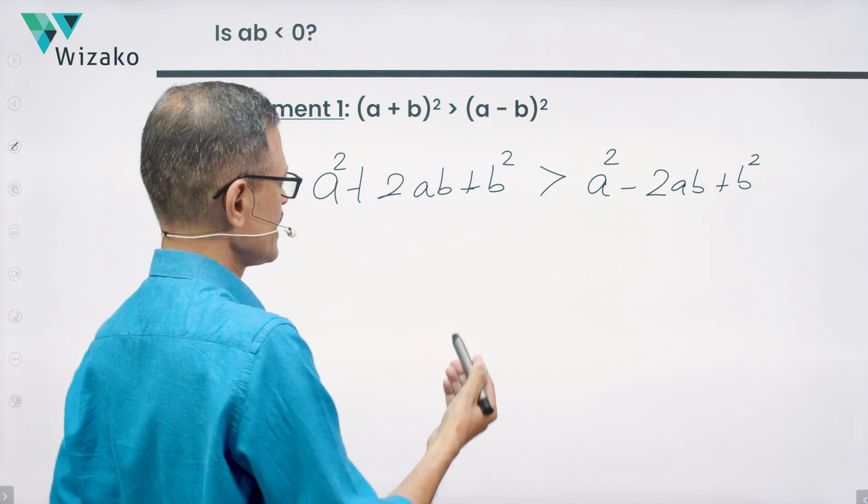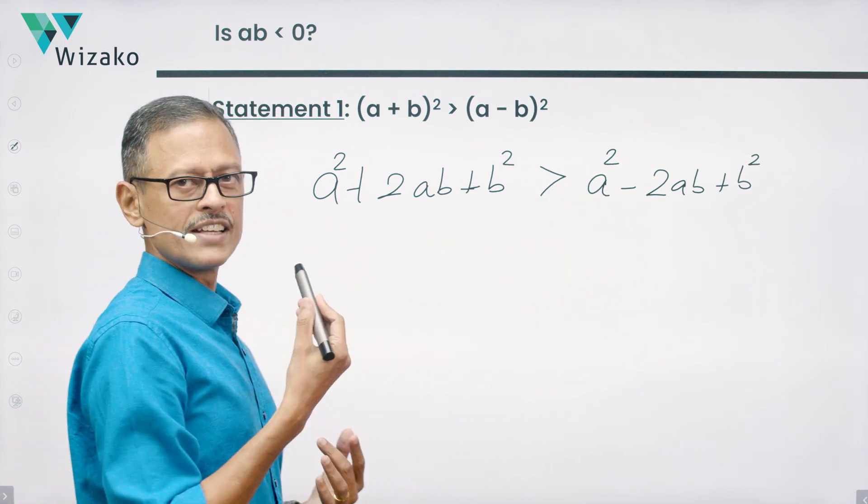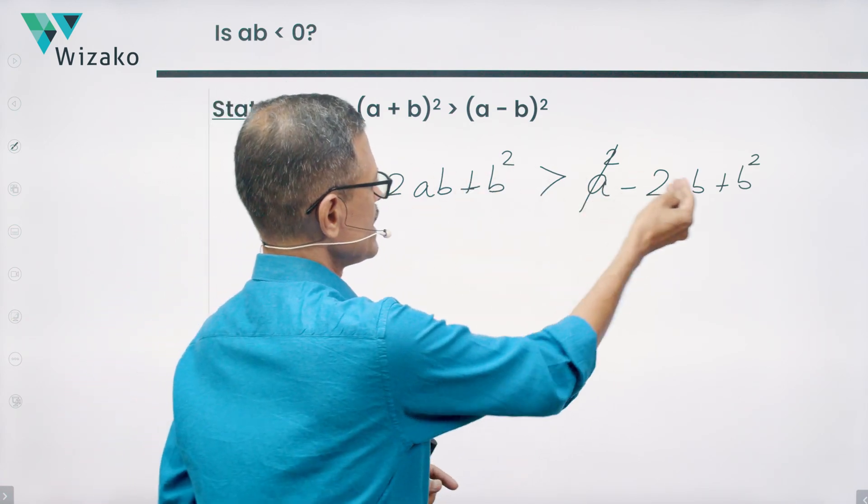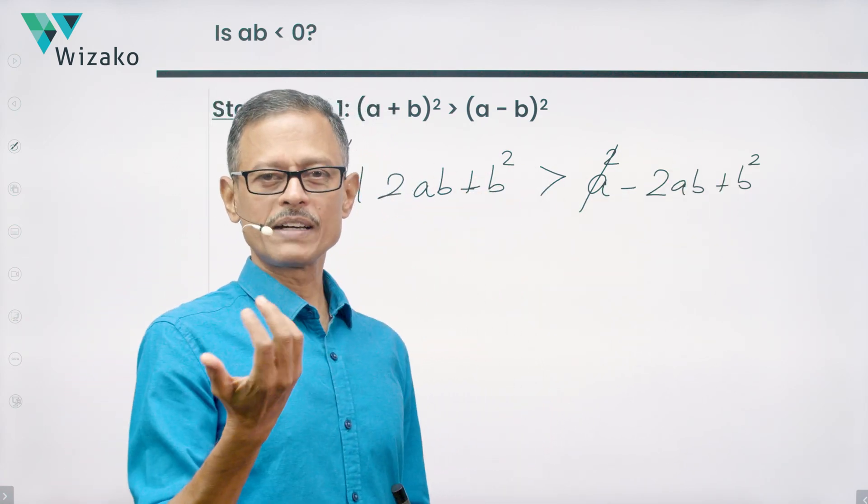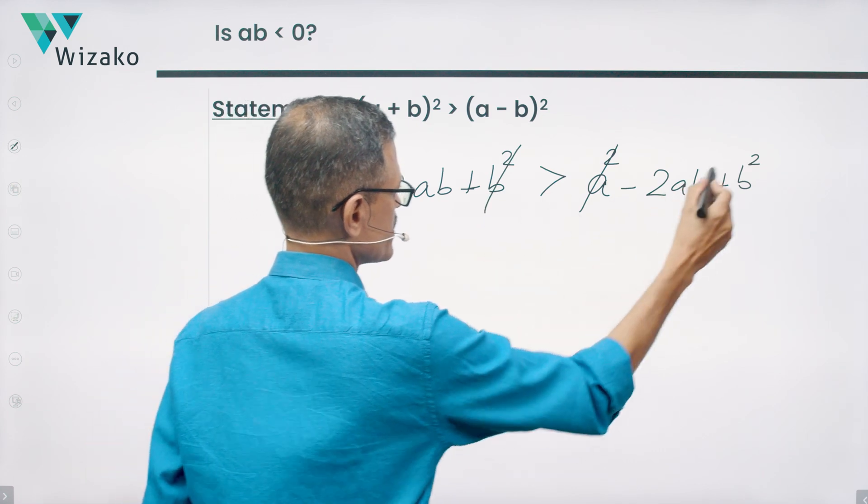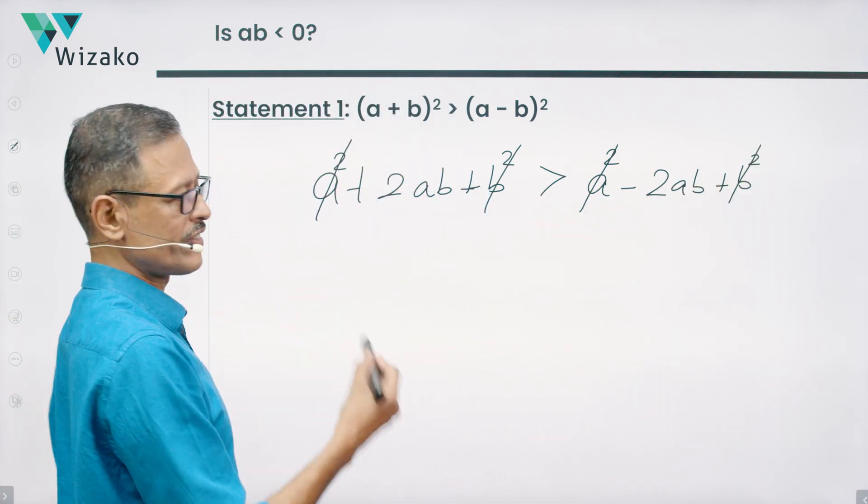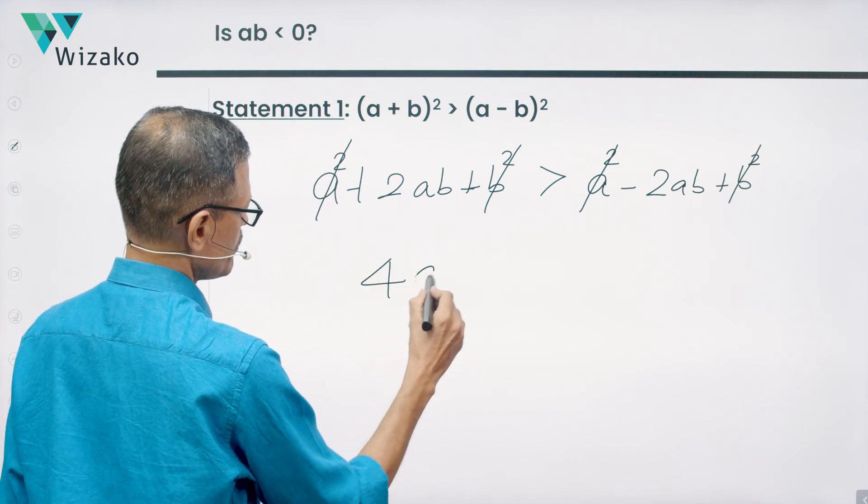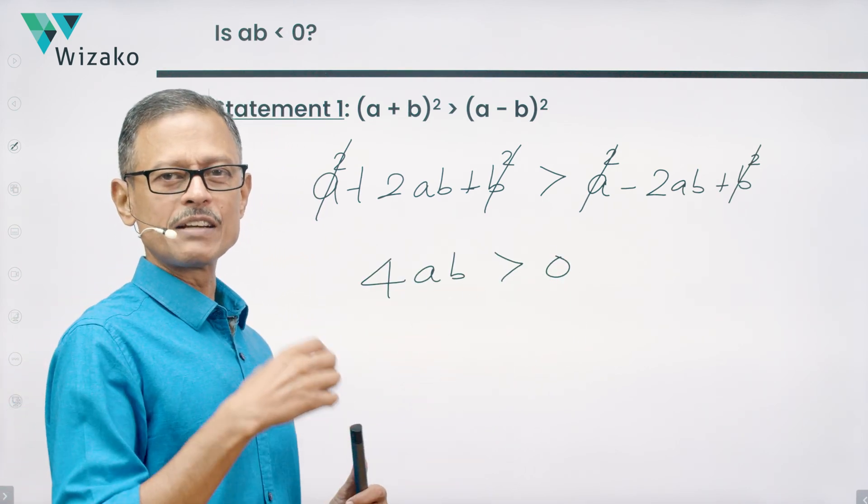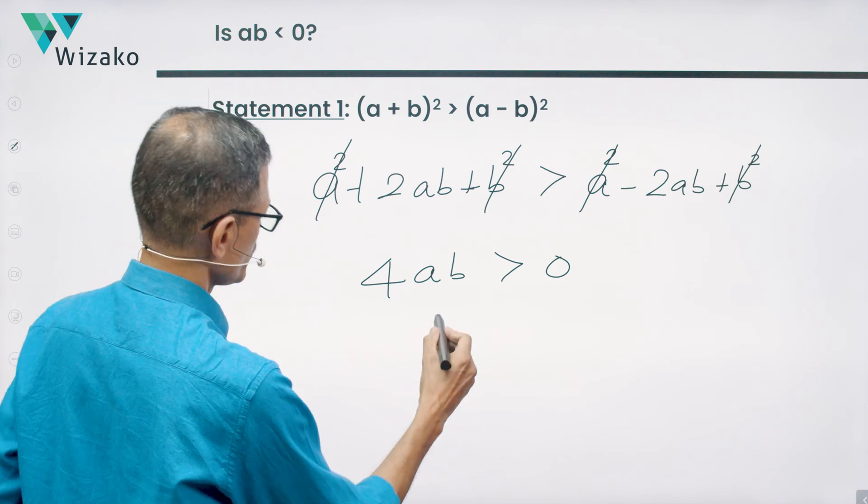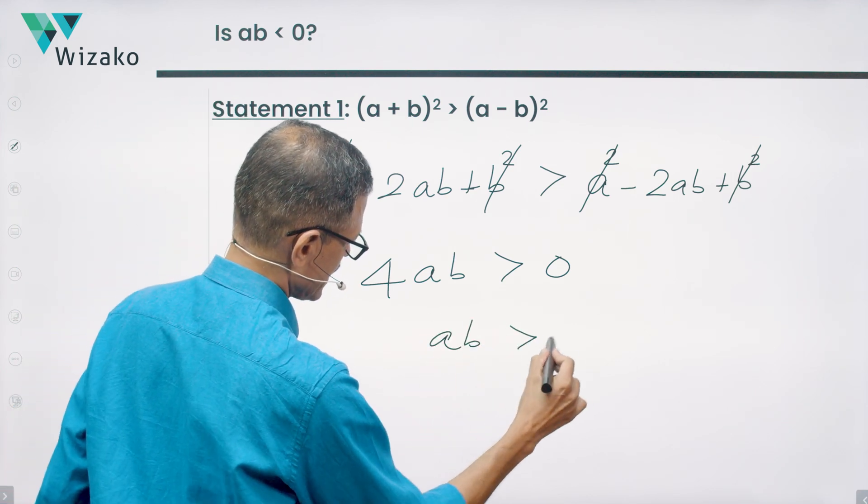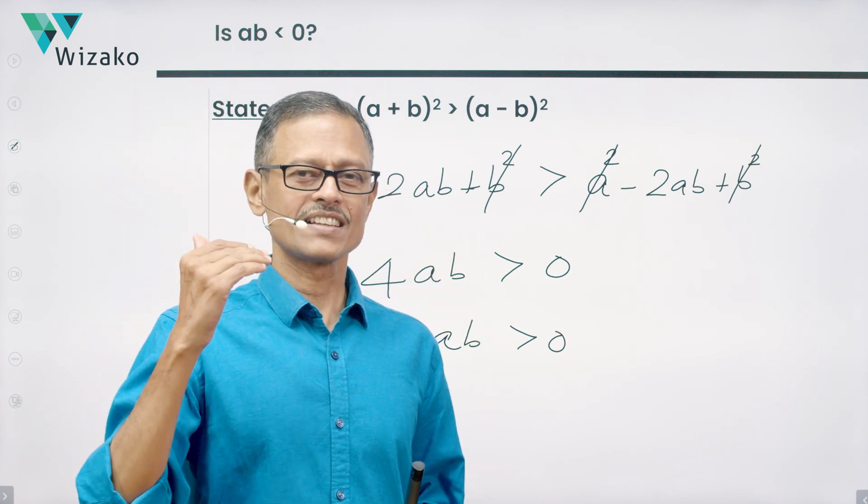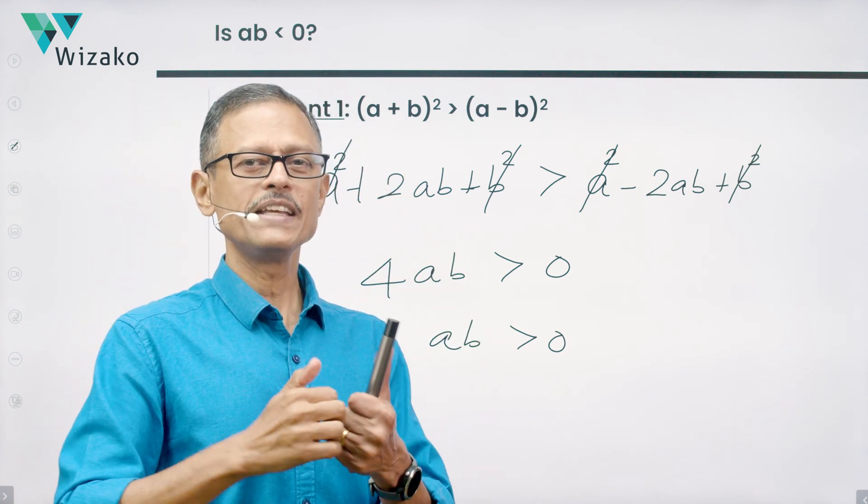Let's take all terms to one side. When a² comes to the left hand side, a² minus a² will become 0. So let's cancel it in that sense. When this b² comes to the left hand side, b² minus b² will become 0. So let's throw this also away. Minus 2ab comes to the left hand side, becomes a plus 2ab. So 2ab + 2ab will become 4ab is greater than 0. Divide both sides of the inequality by a 4. So what you're going to be left with is AB is greater than 0. The question is, is AB less than 0?